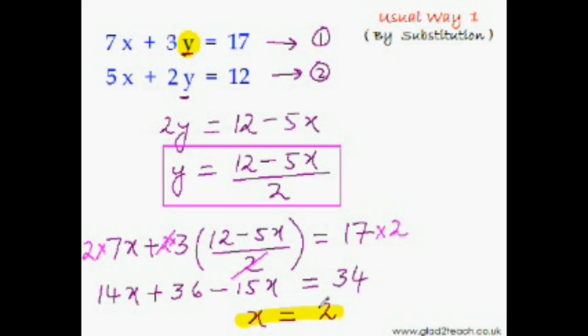Why? Because we still have to find the value of y. But we can do that very easily—simply put this value of x here and we will get the value of y. 12 minus 5 times 2 would be minus 10, so 12 minus 10 would be 2, and 2 divided by 2 will be 1. So y is equal to 1.